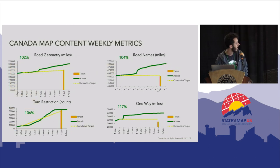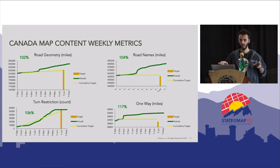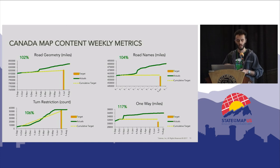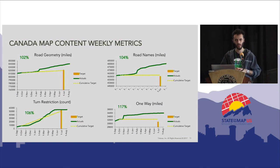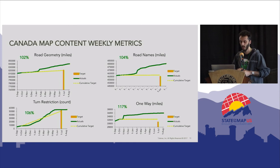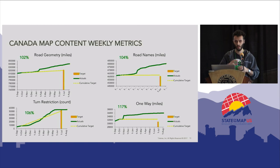Moving on to the Canada map. We organized our work into two main buckets. Our main focus was on the top five metro areas: Toronto, Montreal, Ottawa, Calgary, and Vancouver. Once we built a good foundation for those, we expanded our work throughout the rest of the country. Looking at the metrics right from the start, we were in pretty good shape and close to our goals, thanks to the awesome work of the Canadian community.